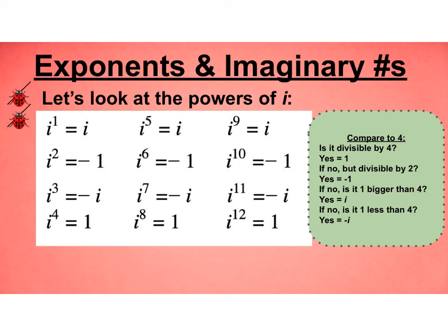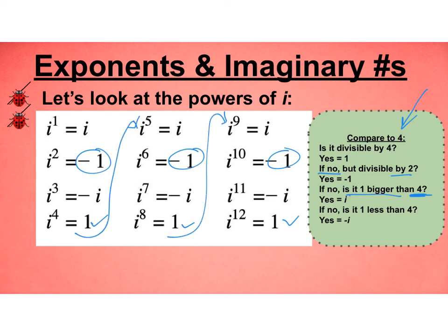So I kind of just compare everything to 4 then. If a number is divisible by 4, then it's going to equal 1. If it's not divisible by 4, but it is divisible by 2, then it's going to equal -1. Then if it's not divisible by 4 or not divisible by 2, I still go back to comparing it to 4. Is it 1 bigger than 4? Like 5, like 9. If it is, then it's going to equal i. Or is it 1 less than? 1 less than, 1 less than, so then it's going to equal -i.